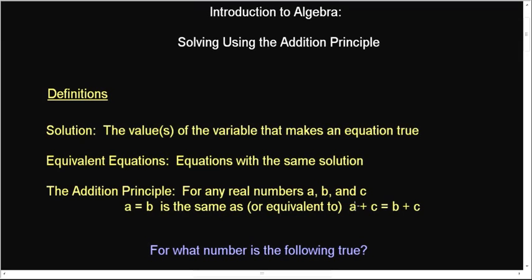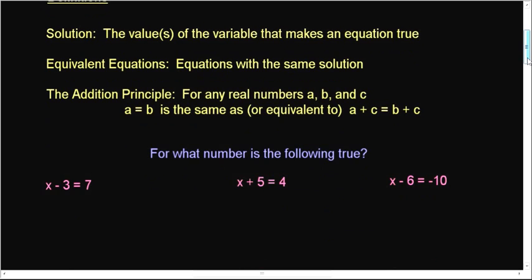But for any real numbers a, b, and c, if a equals b, then a plus c equals b plus c. In other words, you can add the same thing to both sides. Again, it never tells you what a, b, and c has to look like.